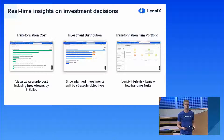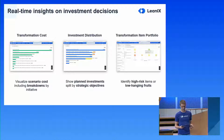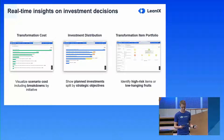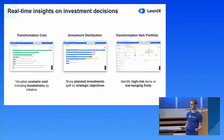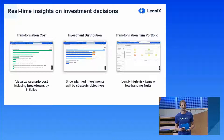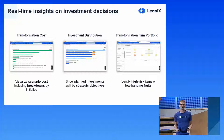The second report is the investment distribution, which lets you easily identify how the cost of all transformation items is distributed across your strategic objectives — so you can see if you're investing into the right objectives or into objectives that don't have a priority. The last report I want to highlight is the transformation item portfolio report, which helps you easily identify high-risk items within your plan or low-hanging fruits that you might want to focus on.